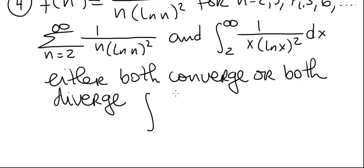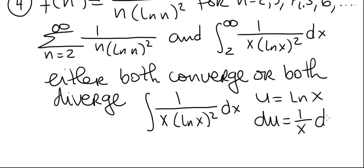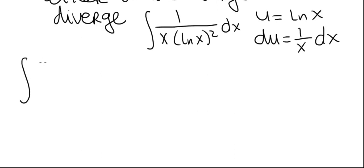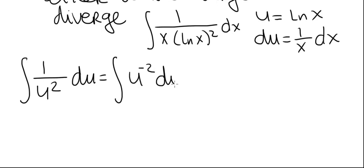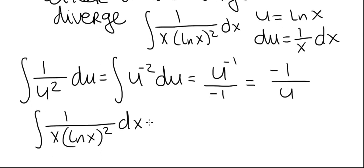First we'll find an antiderivative of 1 divided by x times ln of x squared using u-substitution. Let u equal ln of x, so du is 1 over x dx. In terms of u, this integral becomes the integral of 1 divided by u squared du, which is the integral of u to the minus 2 du. That equals u to the minus 1 divided by minus 1, which is the same as minus 1 divided by u. So the antiderivative of 1 divided by x times ln of x squared is minus 1 divided by ln of x.